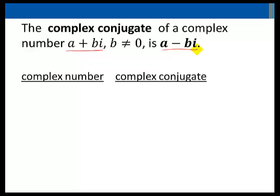Let's look at some complex numbers and determine their conjugates. 4 plus 3i has a complex conjugate of 4 minus 3i.